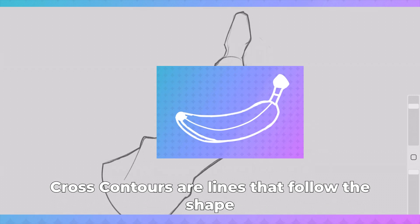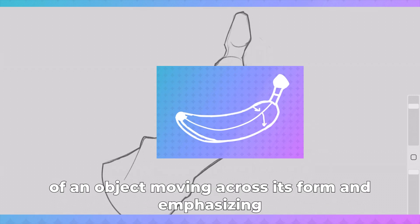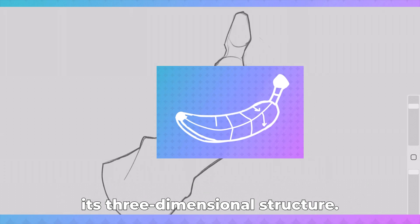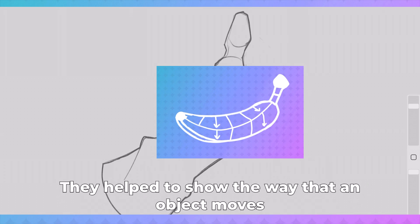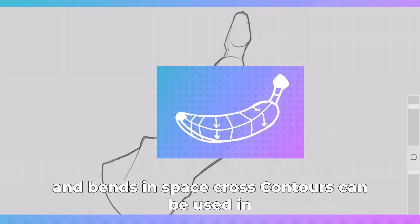Cross-contours are lines that follow the shape of an object, moving across its form and emphasizing its three-dimensional structure. They help to show the way that an object moves and bends in space.